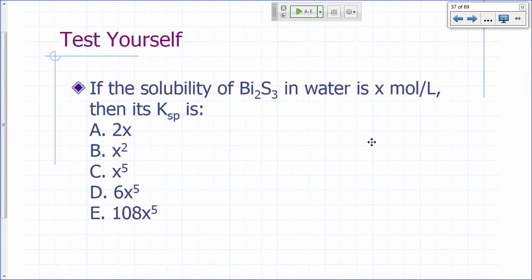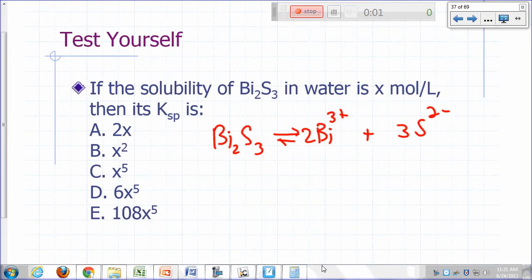So how about this one? If the solubility of bismuth sulfide in water is X, what is the KSP? Recall what was the dissolution reaction? Bi₂S₃ gives you 2 Bi³⁺ plus 3 S²⁻. So if the solubility, solubility means it's saturated. You've added enough so that it's saturated, right? Then that would be the concentration. What would be the KSP?